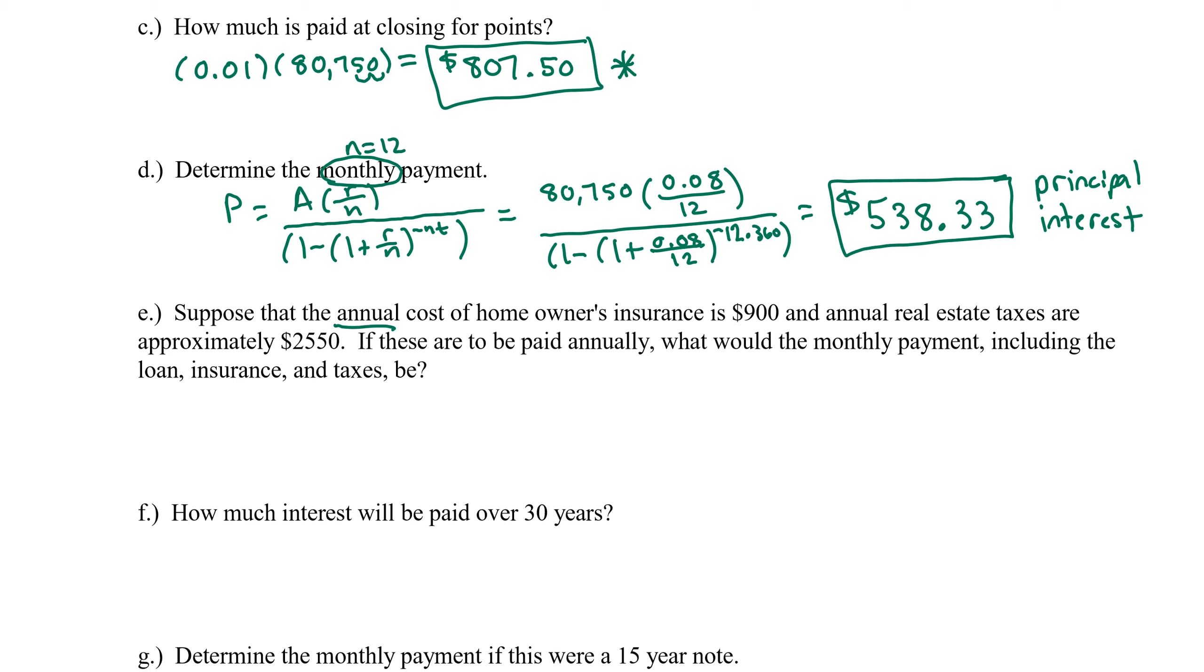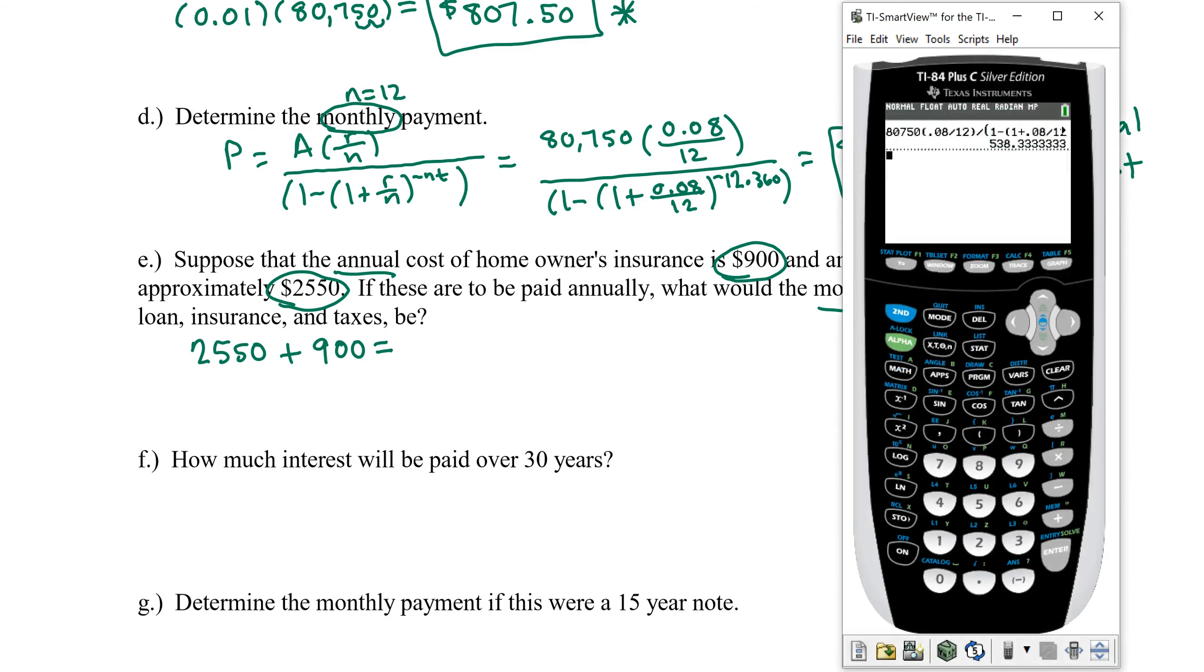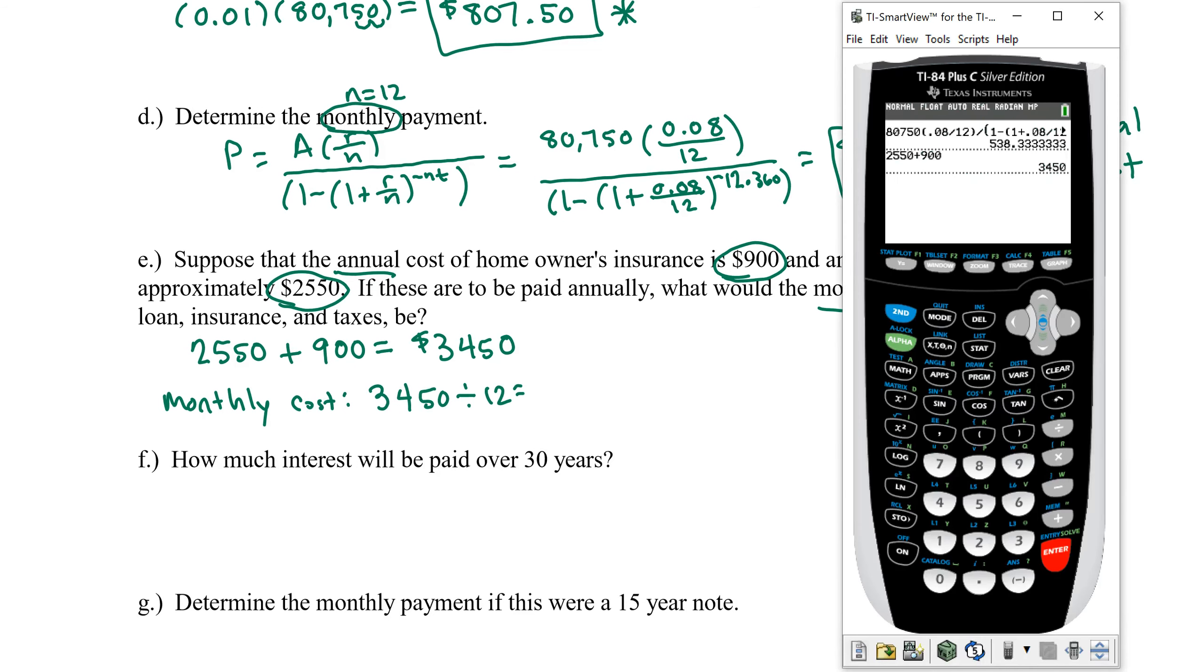Suppose that the annual cost of homeowners insurance is $900 and annual real estate taxes are approximately $2,550. So that price depends on neighborhood. This price depends on a particular company. If these are to be paid annually, what would the monthly payment including the loan insurance and taxes be? Well, if on an annual basis, we're going to owe $2,550 for real estate taxes and $900 for homeowners insurance, this is going to give us an annual fee of $3,450. We want to figure out what that is monthly. So we're going to take this $3,450 and divide it by 12.